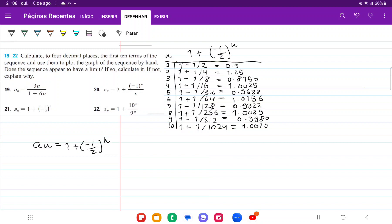So I've gone ahead and I've put in the first 10 terms, because a_1 is going to be 1 plus minus 1 half to the power of 1, so that's 1 minus 1 half. a_2 is going to be 1 plus minus 1 half to the power of 2, so that is plus 1 fourth.